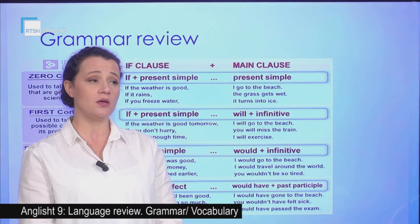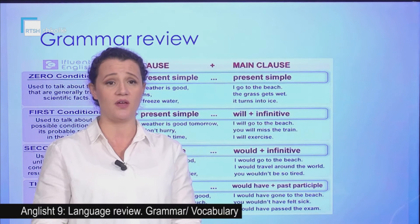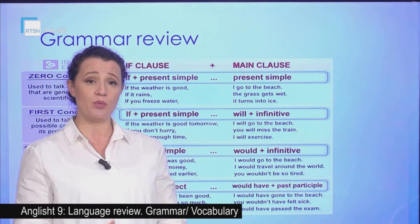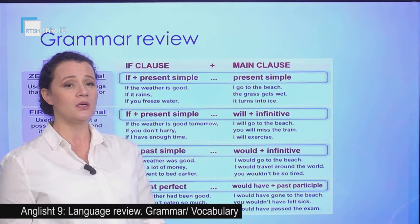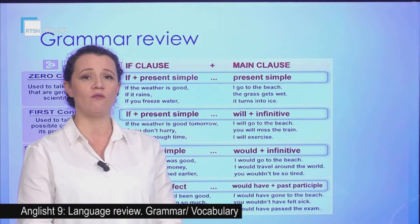Firstly, the zero conditional expresses a fact, a scientific fact. It is formed — let's remember — by: if plus the present simple for the if-part, and the main clause in the present simple once again. The first conditional: if plus the present simple for the if clause, and the main clause uses will plus the infinitive — so a verb in the infinitive.